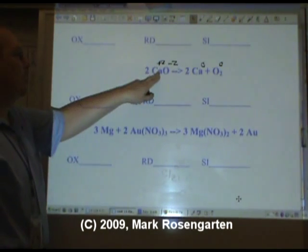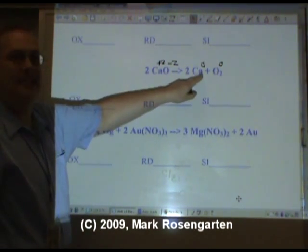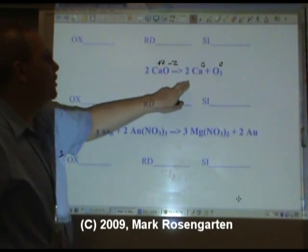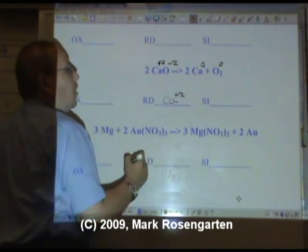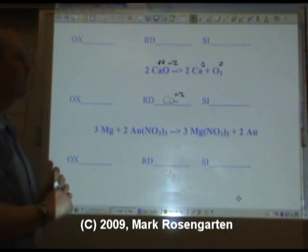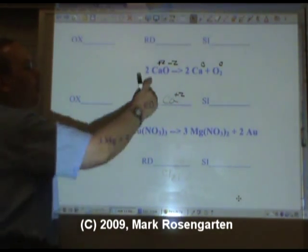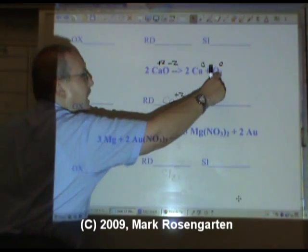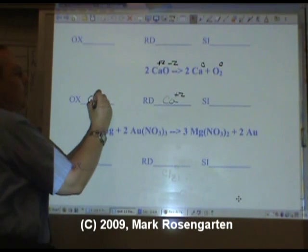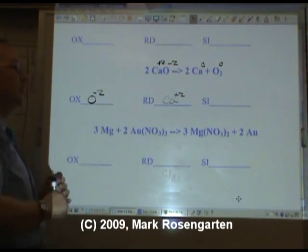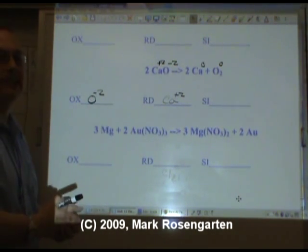Calcium starts off as plus two, winds up as zero. Its charge was reduced in value. Ca plus two's charge was reduced. On the other hand, O minus two's charge became more positive, negative two up to zero. So oxide minus two is oxidized.